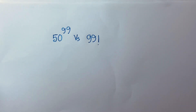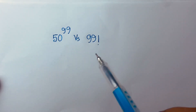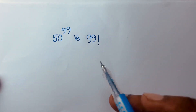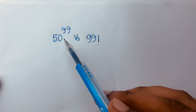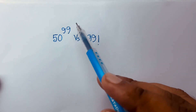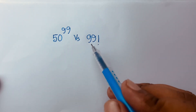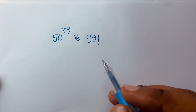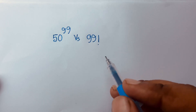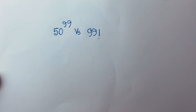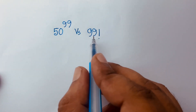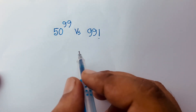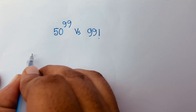In this video we'll find out which is the larger number: 50 to the power 99 versus 99 factorial. It is interesting math. First of all, let's look at 99 factorial.